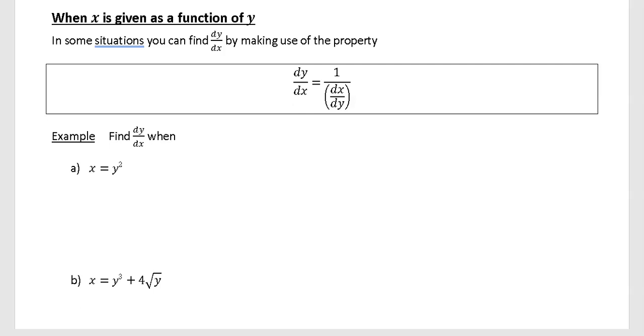In this one, x you can see is written in terms of y, so we could say dx by dy is equal to, and if you differentiate y squared with respect to y, you're just going to get 2y. So that means, therefore, that means dy by dx is equal to 1 over 2y.